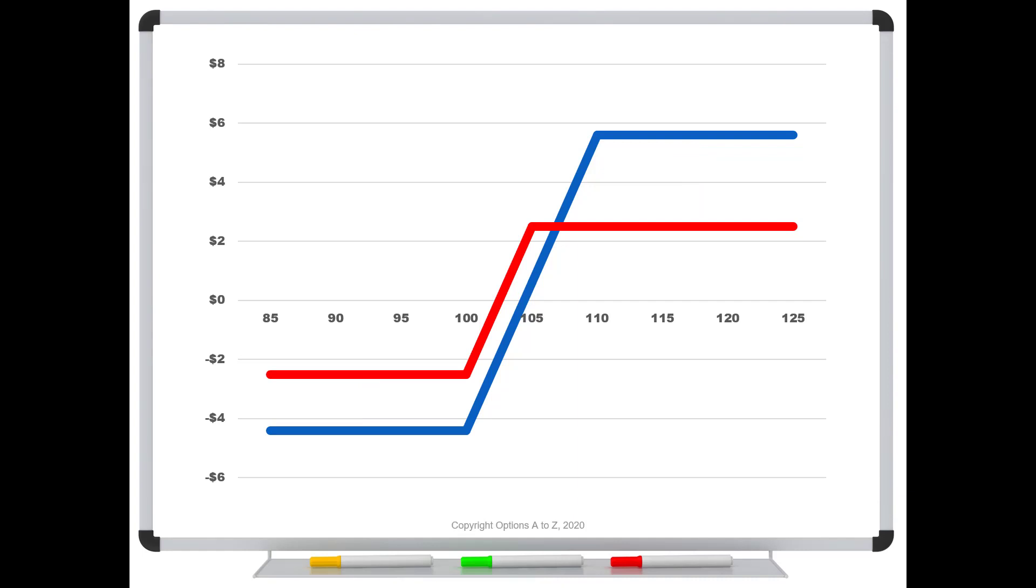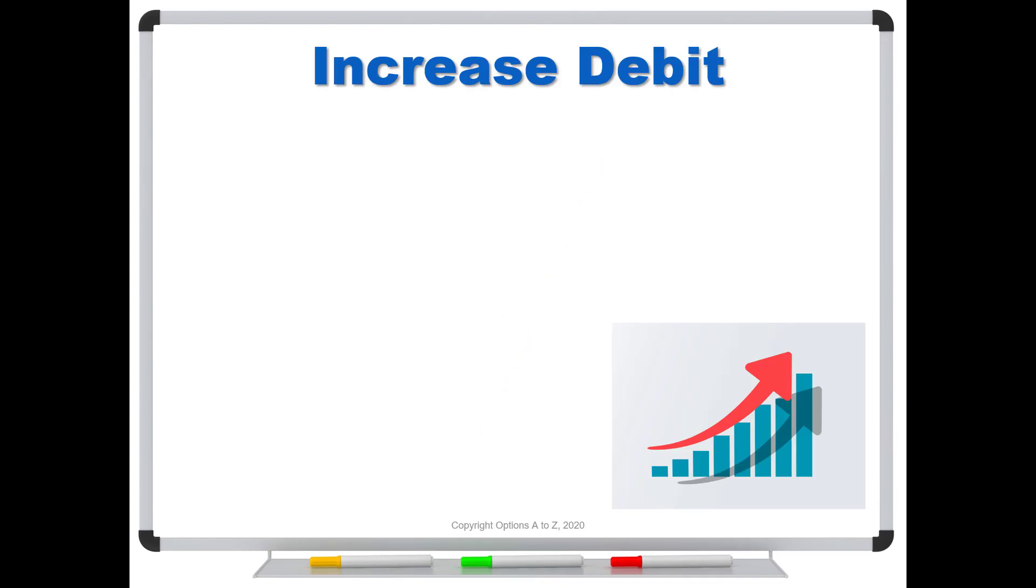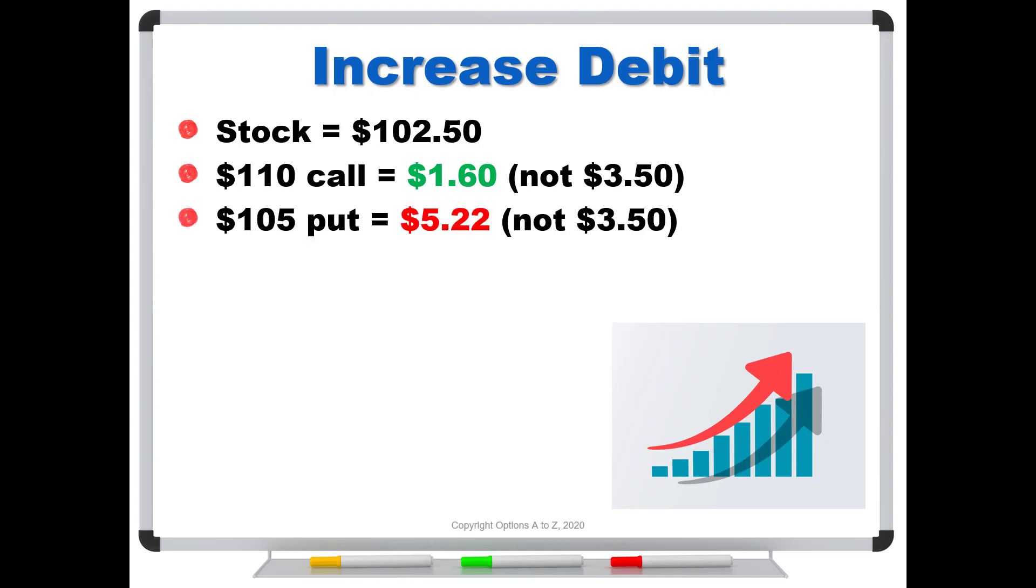What if I didn't want this? What if I wanted less downside risk and more reward than on that red curve? The only way you're going to do that is to increase the debit again—it's the thing that most people wouldn't think to do. They want to head to the credit side or the zero-cost side. Again, stock at $102.50, we sell the $110 call for $1.60, but now I'm going to buy a $105 put and I have to spend $5.22—not $3.50 like before. Now I'm spending a lot more and receiving a lot less, so I can buy the call and sell the put for now $3.62. I've got to spend a lot of money to put on this collar.